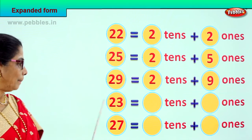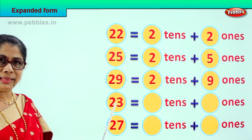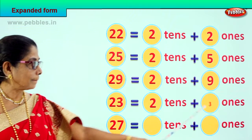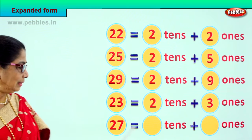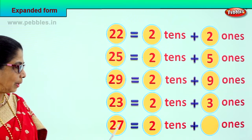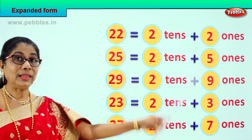Next number: 23 — 2 tens plus 3 ones. And 27 — 2 tens plus 7 ones.